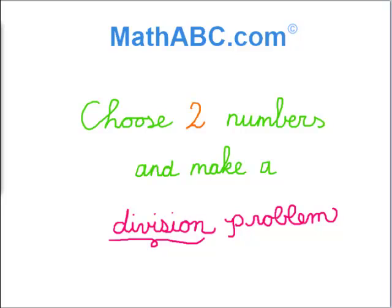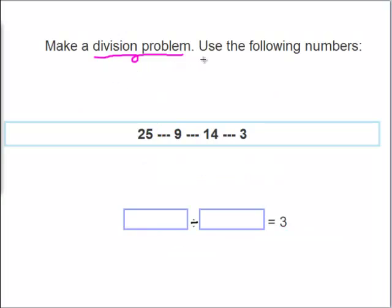Choose two numbers and make a division problem. Use the following numbers: 25, 9, 14, or 3. Now let's look down here. We have a blank box, a division sign, another blank box which equals 3.